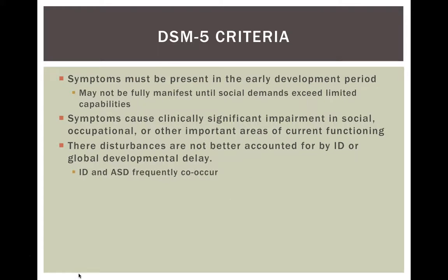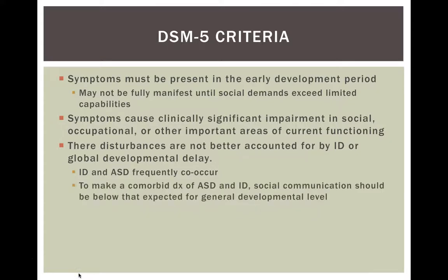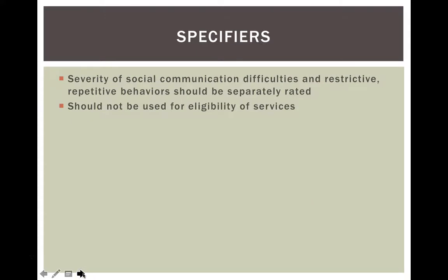We also need to make sure these disturbances are not better accounted for by intellectual disability or global developmental delay. Intellectual disability and ASD do frequently co-occur, though more than half of individuals with autism spectrum disorder do not have an intellectual disability. To make a comorbid diagnosis of both ASD and intellectual disability, we really focus on the social communication piece — because that is what distinguishes ASD and should be below what is expected for their general developmental level given their cognitive abilities.